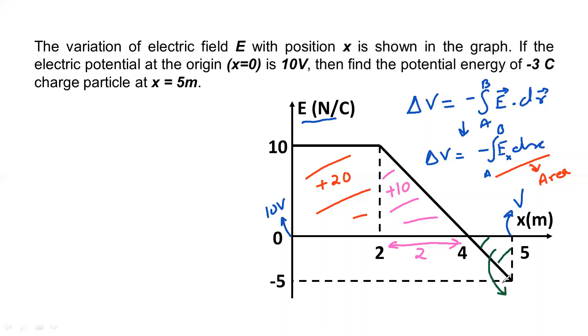Similarly, what about this one, this area? This area value, it is going to be negative. The reason is delta x, the change in x this way, electric field is negative.